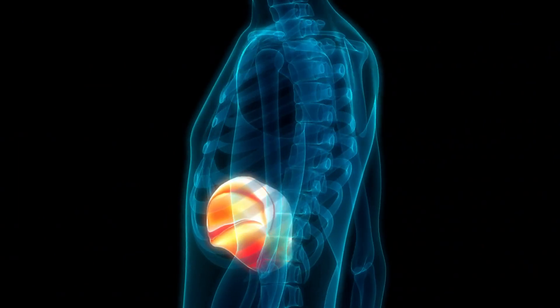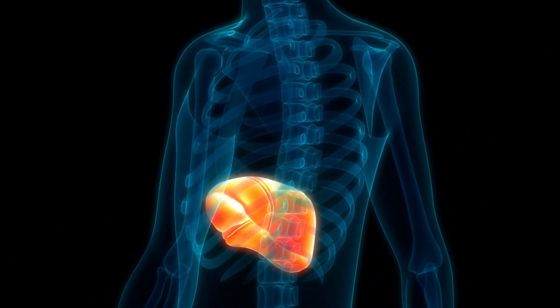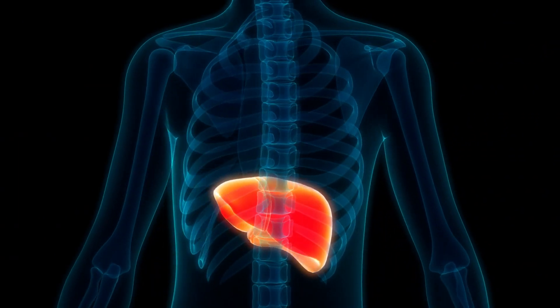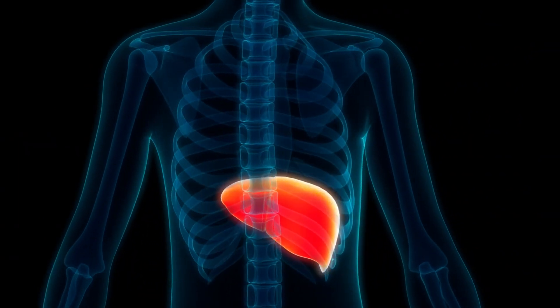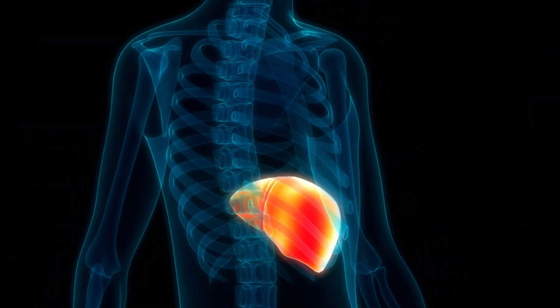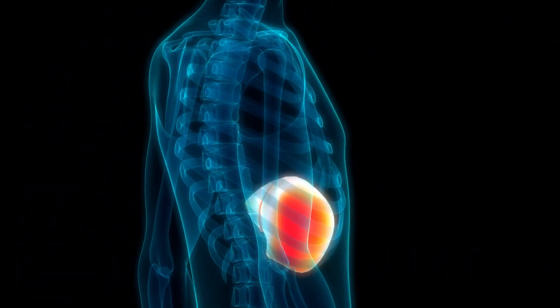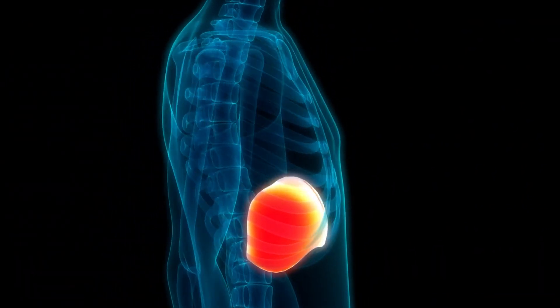Fatty liver disease is known as a silent killer. Once fatty liver syndrome starts, it is silent, and over years or decades ultimately leads to cirrhosis — taking an average of about 20 years to go from fatty liver to cirrhosis.